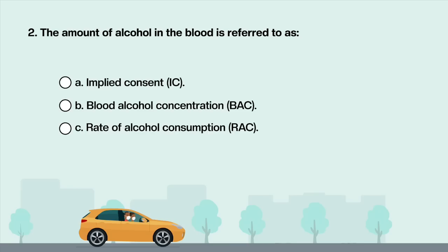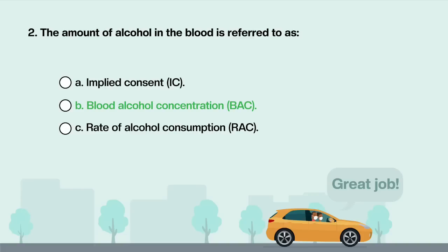The amount of alcohol in the blood is referred to as: A. Implied consent. B. Blood alcohol concentration. C. Rate of alcohol consumption. Answer is B: Blood alcohol concentration.